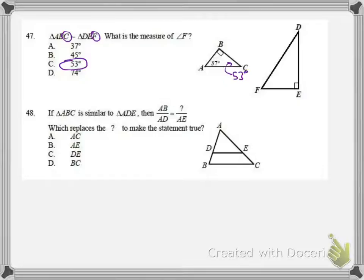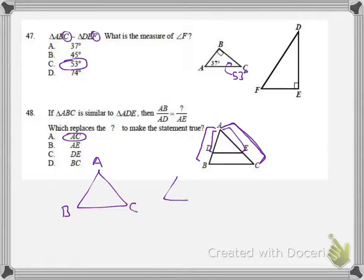In number 48, we're given a proportion for our two similar triangles. We're saying AB, which is the whole side, is corresponding to AD, the top piece. Then what piece is corresponding to AE? Since we went with the whole side on top, we're going to do the same thing in this one, and our answer is AC. If you don't see that, I can draw the two triangles separately, ABC and ADE.